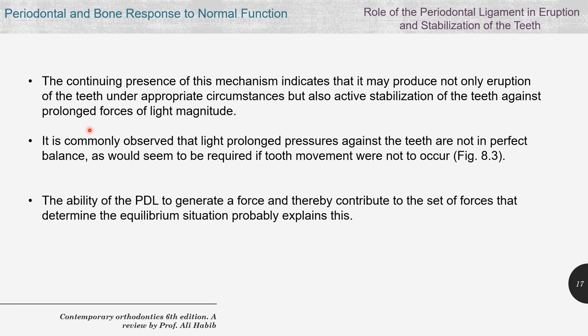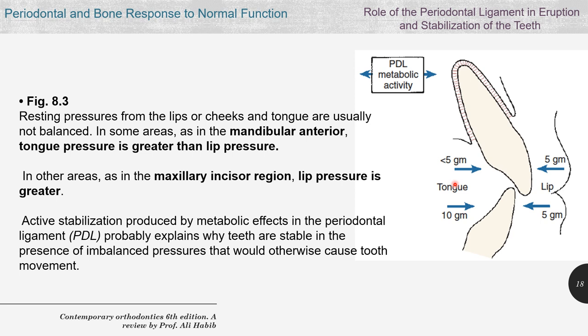It is commonly observed that light, prolonged pressures against the teeth are not in perfect balance. The ability of the PDL to generate force and thereby contribute to the equilibrium situation probably explains this. The PDL exerts eruption forces as well as cross-linking or stabilizing forces. For example, tongue pressure against the upper teeth is about 5 grams, 10 grams against the lower, and lip pressure is 5 grams.